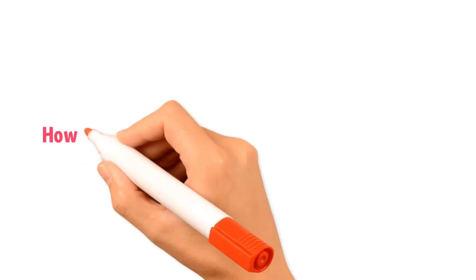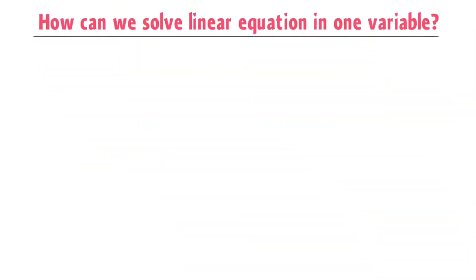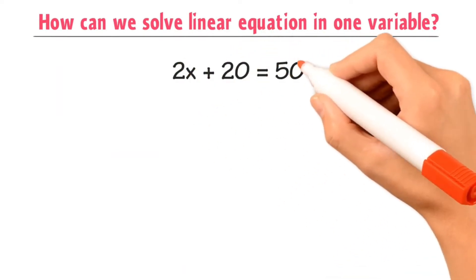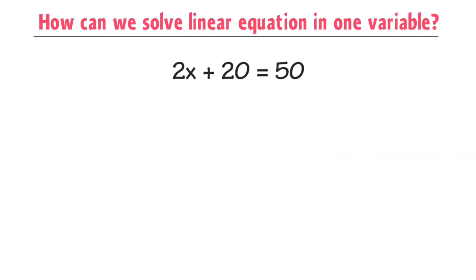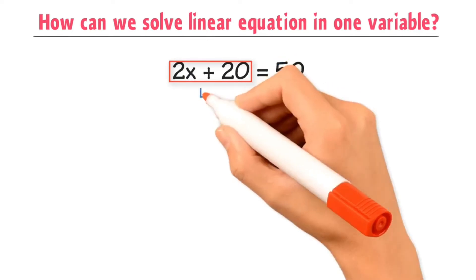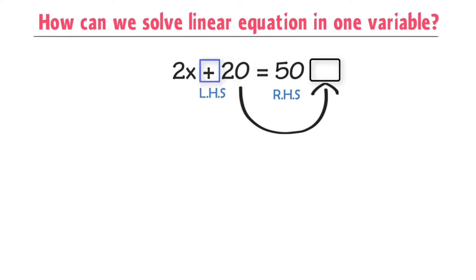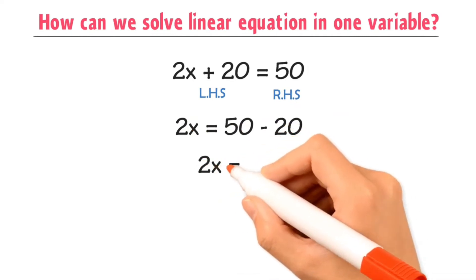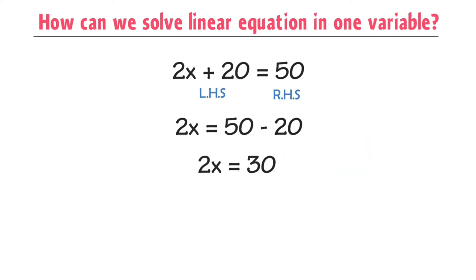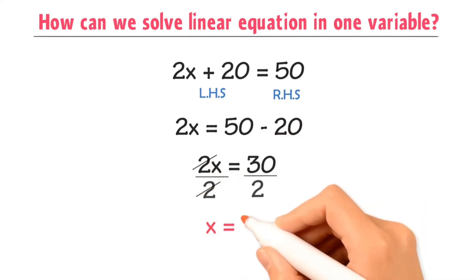Now let me teach you how to solve a linear equation in one variable. For example, if 2x plus 20 is equal to 50 is given and we are asked to find the value of x, remember that the left-hand side and right-hand side are the two sides of the equality sign. Shifting plus 20 from the left-hand side to the right-hand side changes its sign to negative. Hence, 2x is equal to 50 minus 20, or 2x is equal to 30. Dividing both sides by 2, we get x is equal to 15.